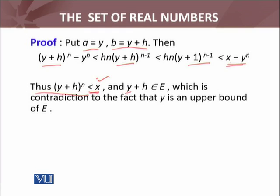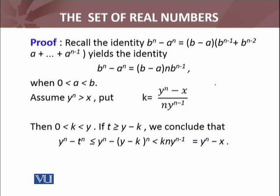It means y + h belongs to E, which is a contradiction. Contradiction to what? That y is the supremum and an upper bound. Can y + h be less than or equal to y? y + h is a larger number than y. So we reached a contradiction. It means what we assumed, y^n < x, is false.